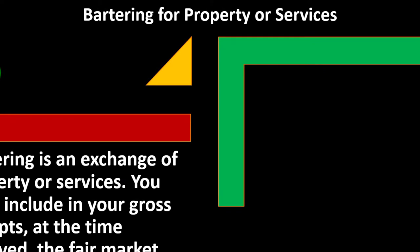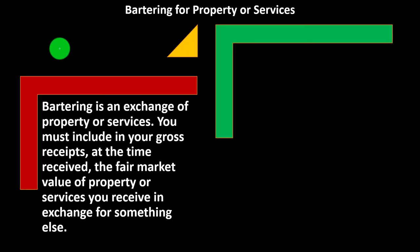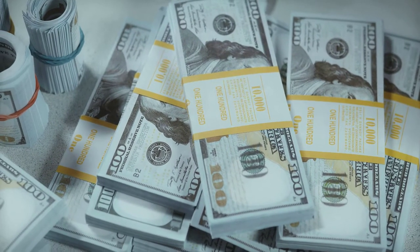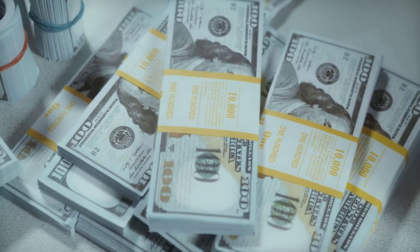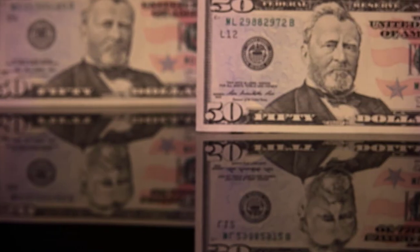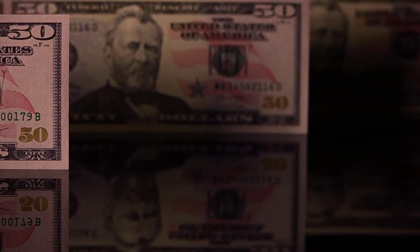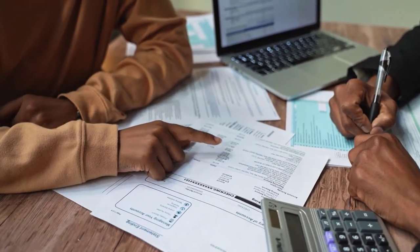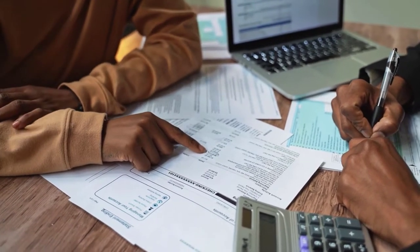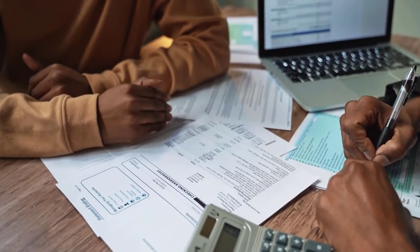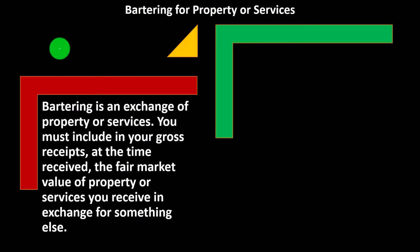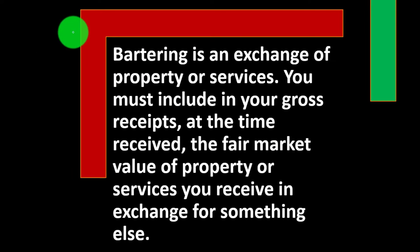Now we have bartering for property or services. When most people think about income, they think about providing goods or services and receiving some form of cash or currency. You might think: to avoid reporting income — since for taxes income is bad — you could make a trade or barter with someone else. With no cash involved, especially on a cash basis, you might think you don't have to record the income. But the IRS says that's not the way things work.